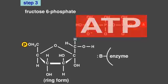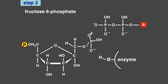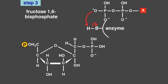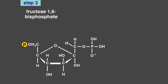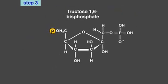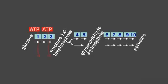In the third step of glycolysis, the enzyme phosphofructokinase uses ATP to phosphorylate fructose-6-phosphate. ADP is released, and the molecule fructose-1,6-bisphosphate is formed. This third step, in which the second phosphorylation event occurs, is irreversible and is a major regulatory point in the commitment to glycolysis. The phosphorylations in steps one and three represent an investment of energy that will be paid back in the later stages of the pathway.